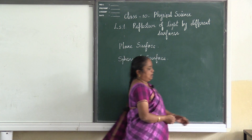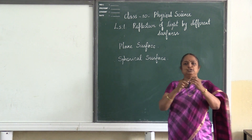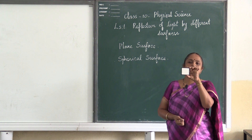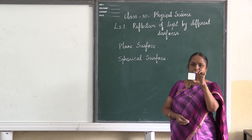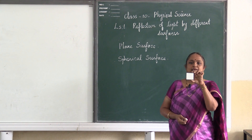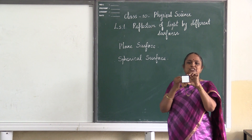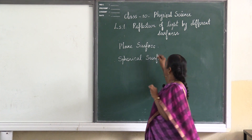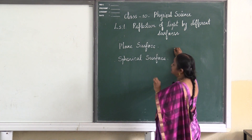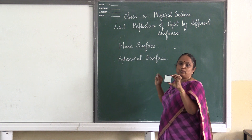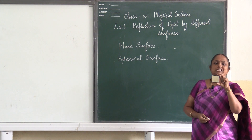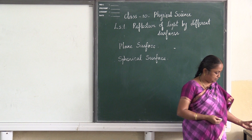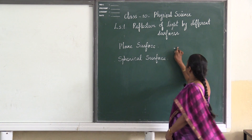Now I have an example to show you. This is a plane surface which we also call a plane mirror. About this plane mirror and the reflection on this plane mirror, we have learnt it in our lower classes. So I am just going to explain to you the concept of reflection on a plane surface or a plane mirror.